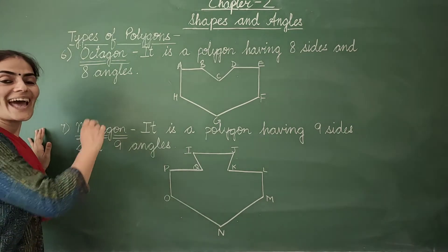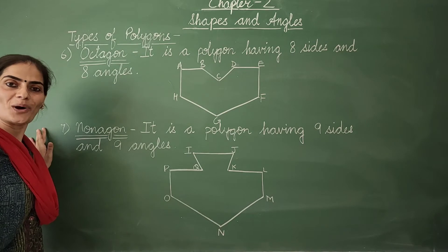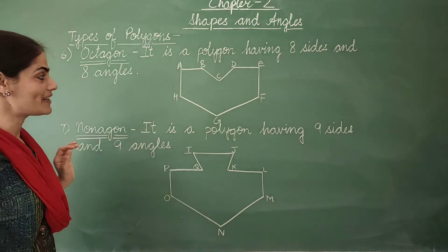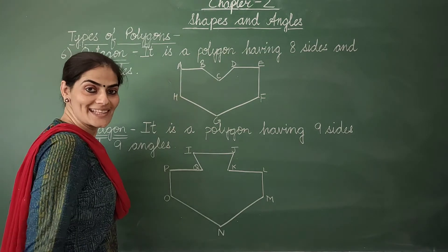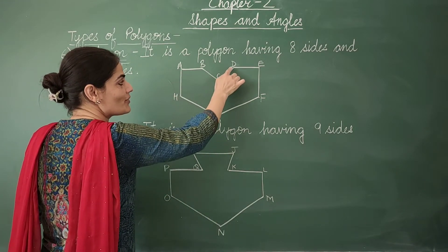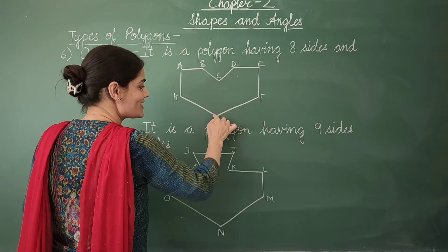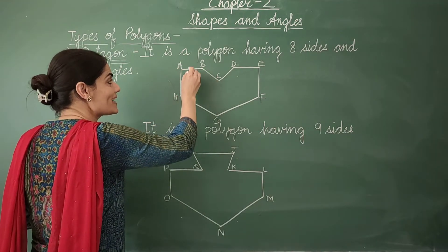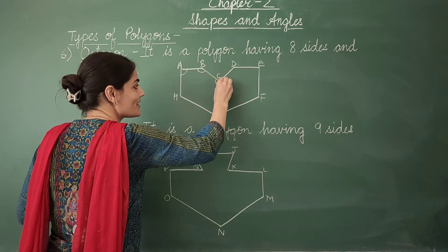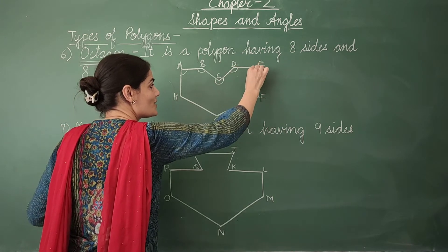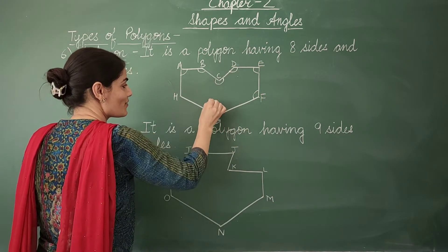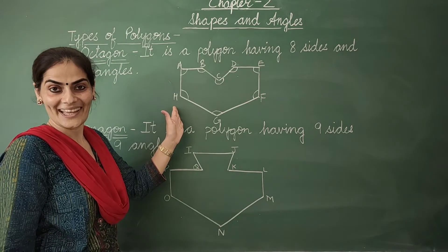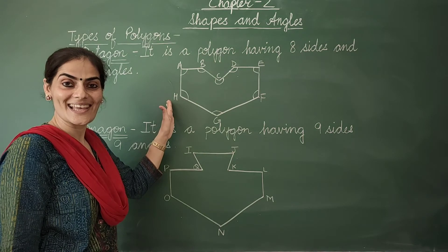The next type of polygon is an octagon. An octagon is a polygon having eight sides and eight angles. Let's count the sides — one, two, three, four, five, six, seven, eight. It has eight sides and eight angles. That is why we classify it as an octagon.